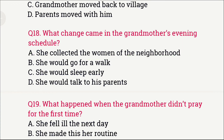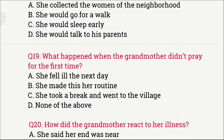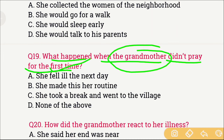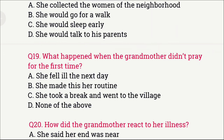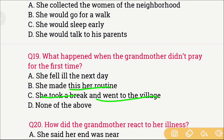Question number 19: What happened when the grandmother didn't pray for the first time? The options are: A) She fell ill the next day, B) She made this her routine, C) She took a break and went to the village, and D) None of the above. The right answer is option A — she fell ill the very next day.